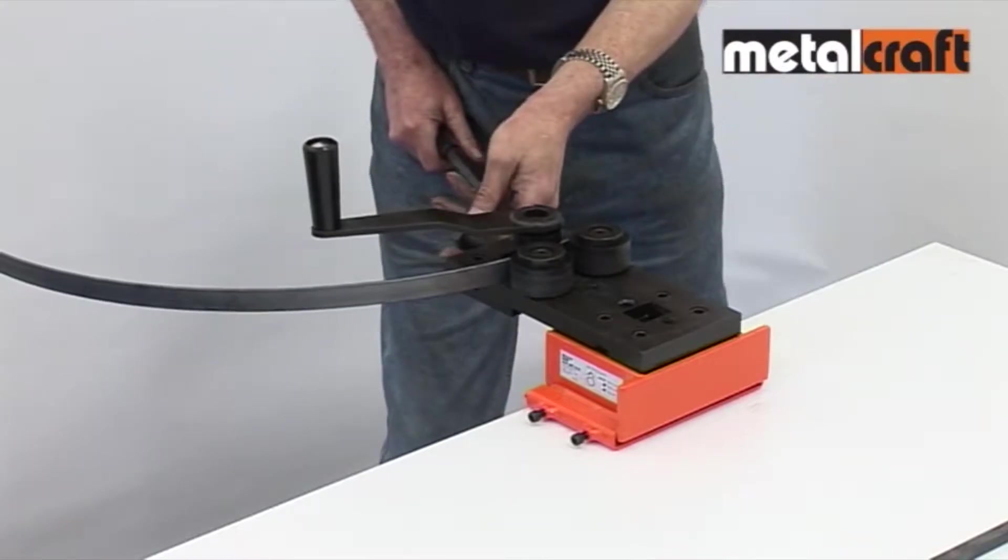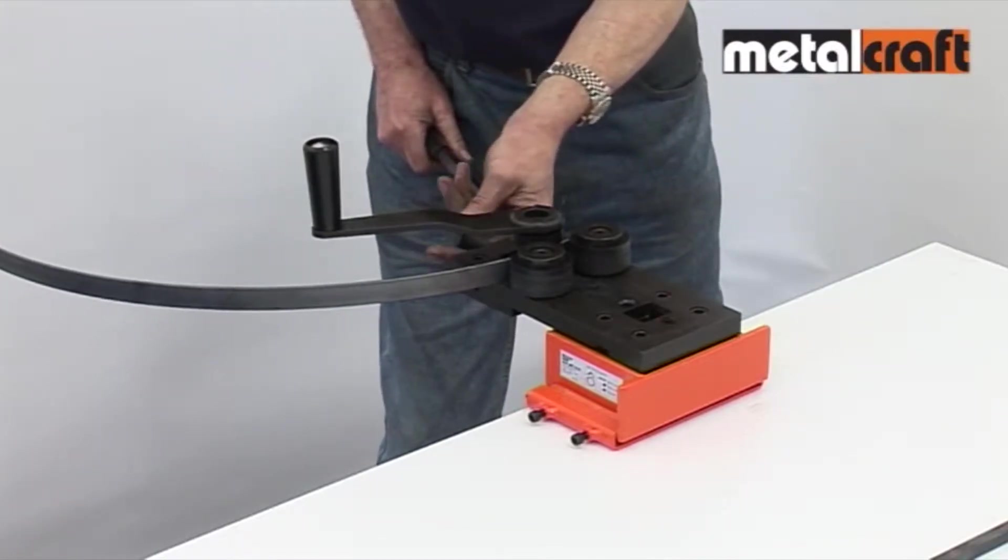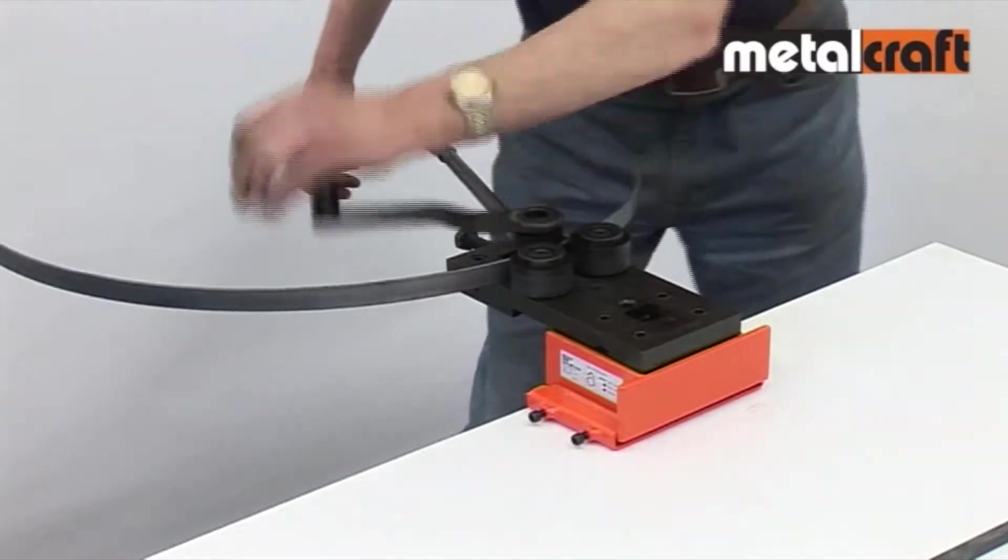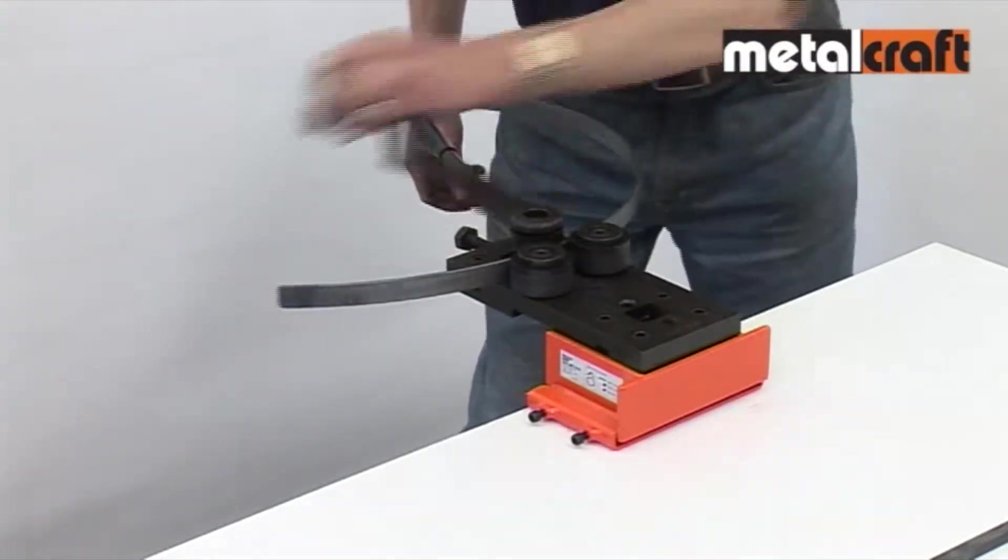Then you apply more pressure with the long handle, and maintain this with the adjusting screw, and then drive the bar back through the rollers. This is repeated until you've formed your desired curve or circle.